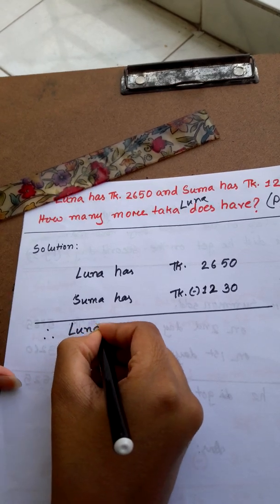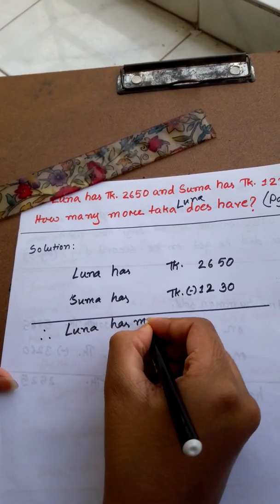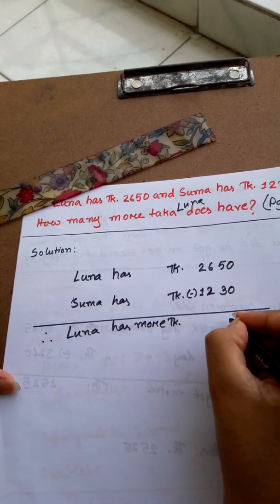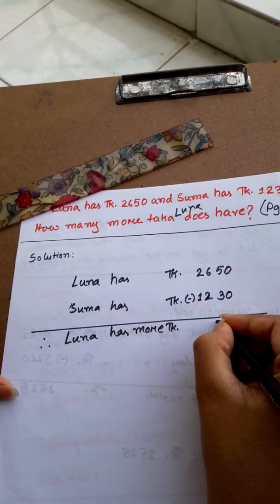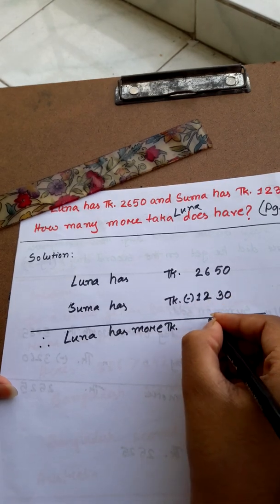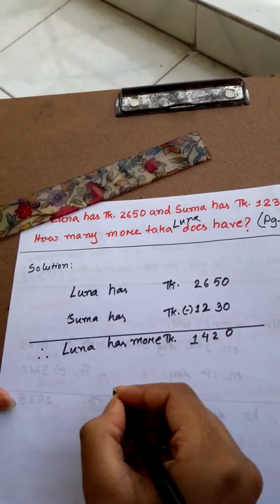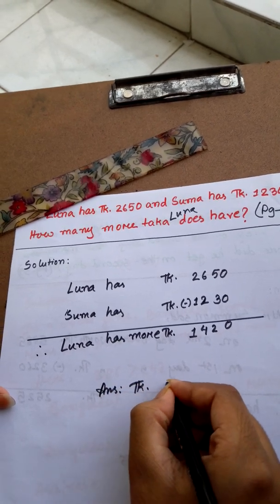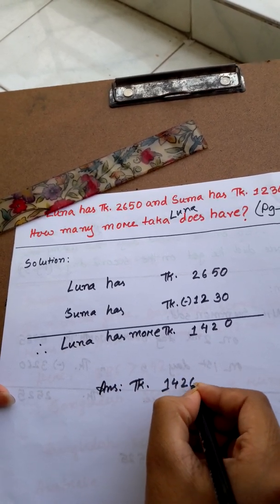Therefore, Luna has more Taka: 5-3, 2, 6-4, 2, 2-1, 1. So answer: Taka 1,420.